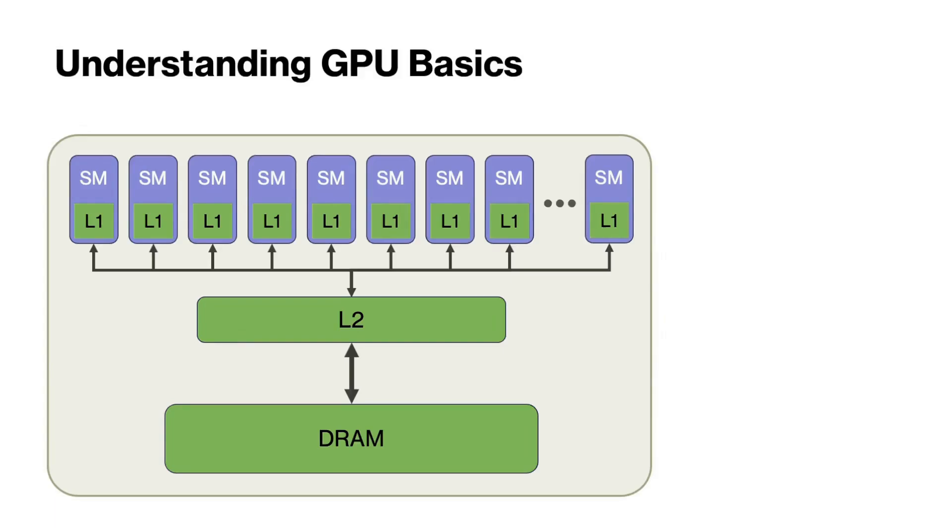Before we see the flash attention algorithm, it's important to understand the basics of GPU structure with different memory levels and execution flow. This diagram shows a simplified view of GPU memories. On the bottom we have the DRAM, which stands for dynamic random access memory. DRAM is the largest memory in a GPU but also the slowest one.